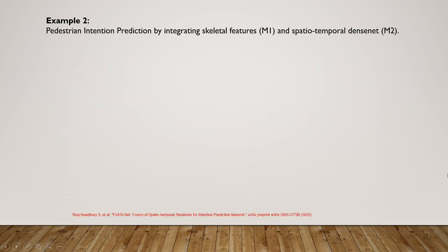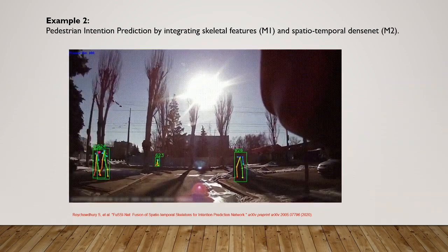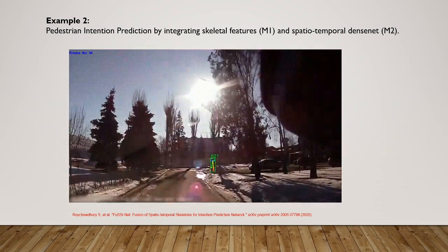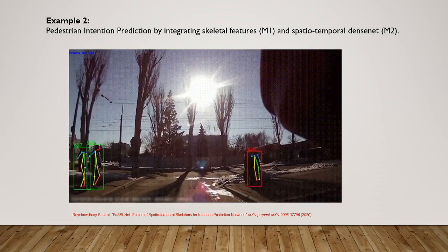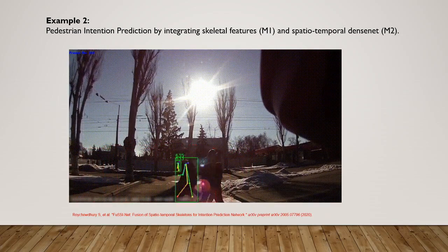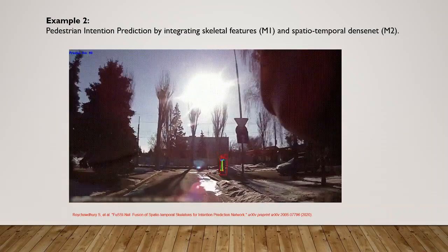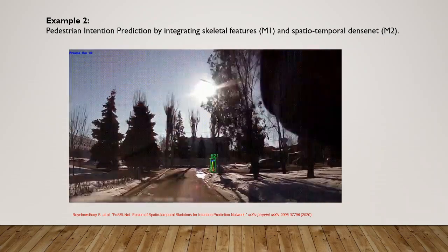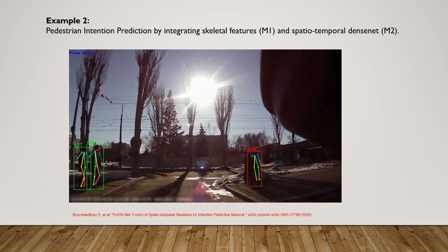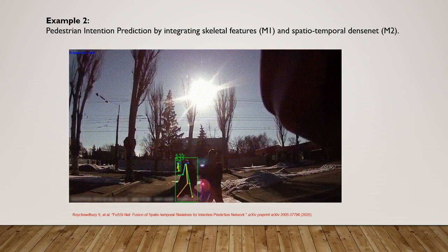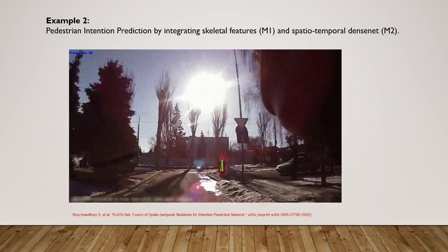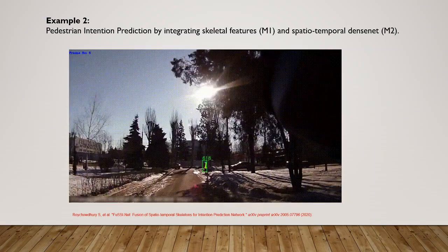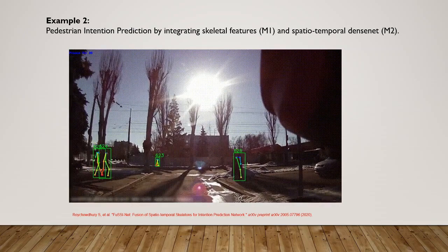Another project is pedestrian intention prediction. Here we integrated skeletal features — the skeleton system is M1 — with a spatial-temporal dense net, where bounding boxes detect and extract features corresponding to pedestrians. The goal is to predict whether a pedestrian will jump in front of the ego vehicle, making an advanced prediction up to half a second ahead. We've published this paper with the code base showing the M1 and M2 integration.